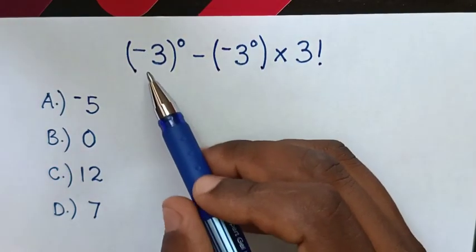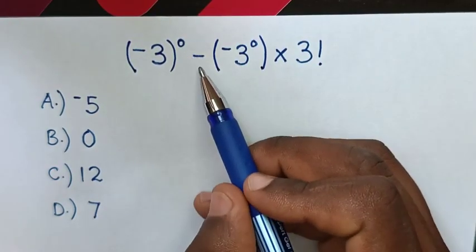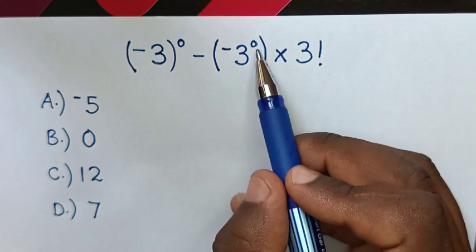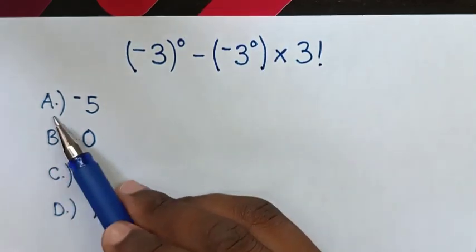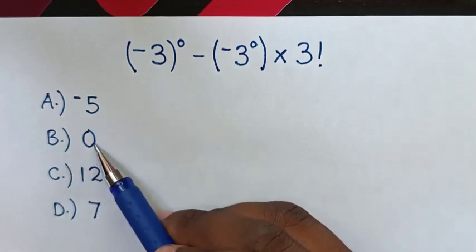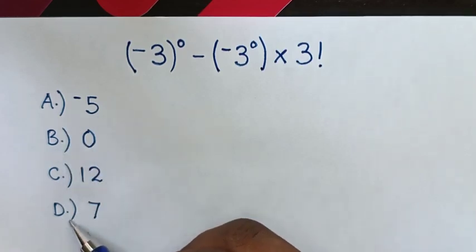Hello! How to solve negative 3 brackets power of 0 minus negative 3 power of 0 brackets times 3 factorial? Select between the answer A, negative 5, B, 0, C, 12, D, 7.